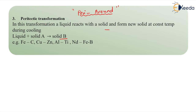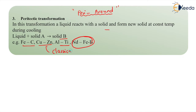What are the famous examples for this reaction? We have iron-carbon, copper-zinc, aluminum, titanium, niobium, iron and boron. The niobium-iron-boron system is a strong magnet and also has this peritectic transformation. Copper and zinc — that is classical brass — is a peritectic alloy system, having more than five peritectic reactions.